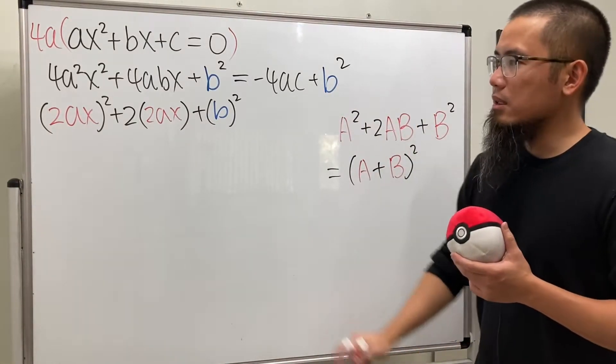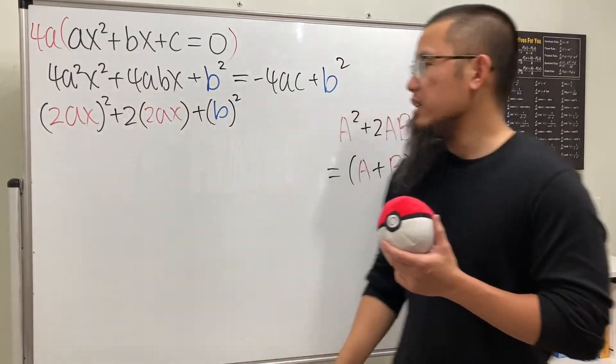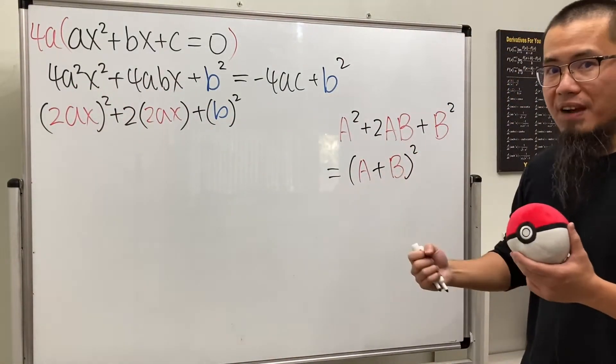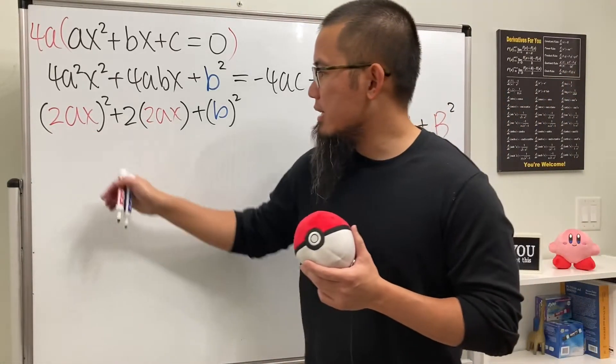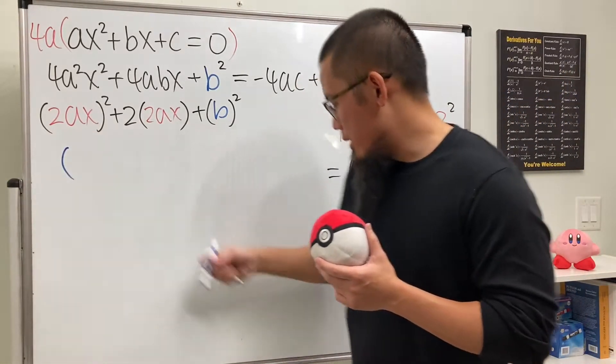And ladies and gentlemen, the left-hand side is in fact in this form, so we can factor it and we get a very nice perfect square. Namely, this guy goes first: 2ax...